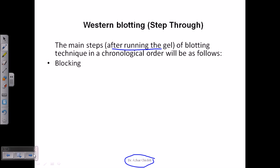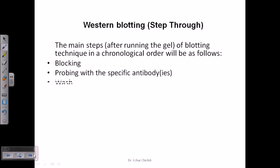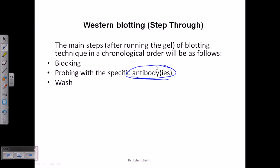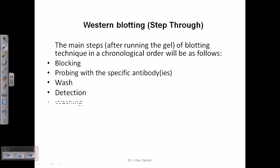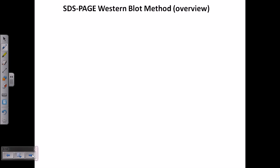The main steps are as follows: first, blocking — to reduce background noise; second, probing with specific antibodies. This is why it is also called immunoblotting, as antigen-antibody and substrate-enzyme interactions are used. After probing, we wash to remove excess unbound probes, then detection, then washing again, then X-ray or gel documentation to get the final pictures.